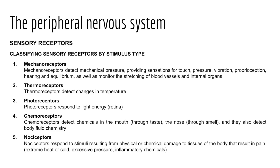Photoreceptors detect light that strikes the retina of the eye. Chemoreceptors detect chemicals in the mouth through taste, odorants in the air through smell, and can also detect body fluid chemistry such as ion or gas concentrations in the blood. Finally, nociceptors respond to stimuli from physical or chemical tissue damage, resulting in pain. For instance, when temperature gets too high or too low, nociceptors make us feel pain rather than temperature itself.